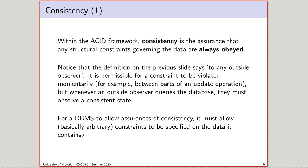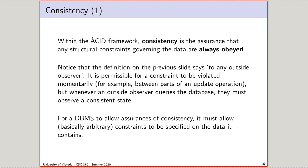Within our ACID framework, consistency is the assurance that whatever constraints you've defined — and these are things that you, the database designer, have created, such as primary keys, foreign keys, or arbitrary functions that run on insertion — they are always obeyed. We shouldn't think about constraints as things that are enforced at given times. Instead, we should think about constraints as properties of the universe. If I define a constraint that every ship has a captain, then at any moment, anybody observing any part of that database should see a view of the world consistent with that constraint.